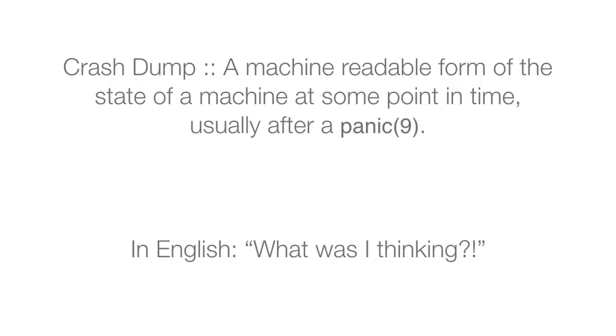So, what's a crash dump? A crash dump is a machine-readable form of the state of a machine at some point in time, usually after a panic. For a human analogy: if you made a mistake and did something embarrassing, it'd be like having a list of exactly what you were thinking, so you could go back and figure out why.